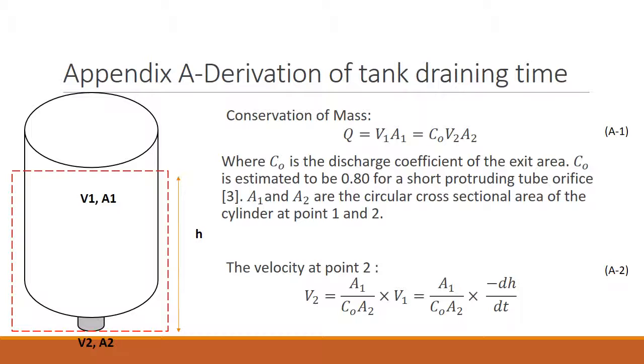Conservation of mass. The mass flow rate Q is equal to V1 times A1 equal to CO times V2 times A2, where CO is the discharge coefficient of the exit area. CO is estimated to be 0.8 for a short protruding tube orifice. A1 and A2 are the circular cross sectional area of the cylinder at point 1 and point 2. The velocity at point 2 is V2 equal to A1 over CO times A2 times the negative change in height over time.